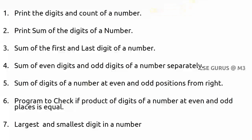Let us take an example. I'll take a number where n is equal to 523. What are the digits in this? I can say that the digits are 5, 2, and 3 — or 3, 2, and 5. So I want to print those digits. How to print those digits?